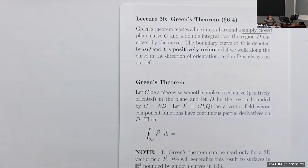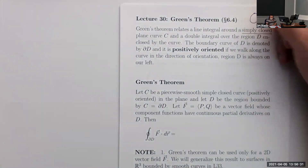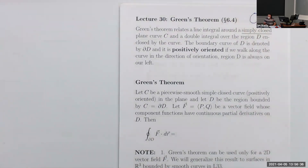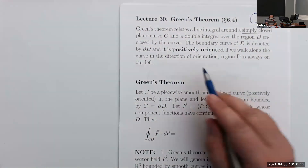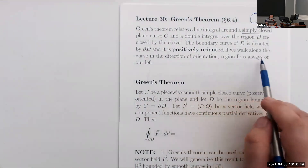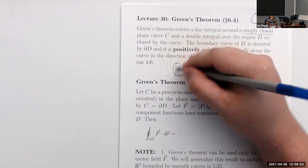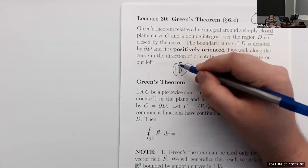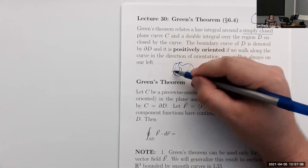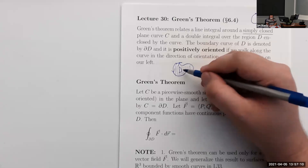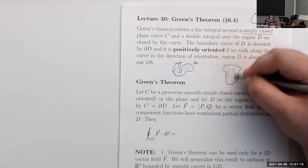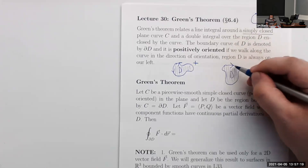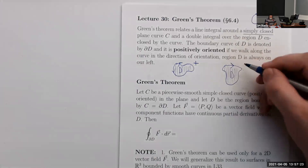Green's theorem relates a line integral around a simply closed plane curve C. A simple closed curve means it doesn't cross itself — something like a plain loop is okay, but a self-intersecting one is not. The boundary curve of D is denoted by ∂D and it is positively oriented if, as we walk along the curve in the direction of orientation, the region D is always on our left.